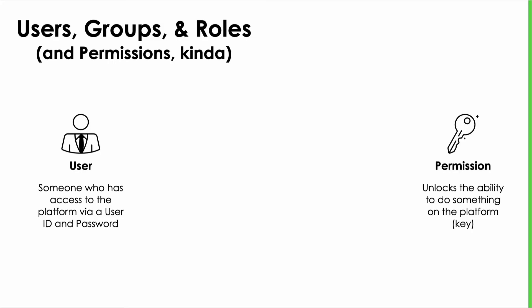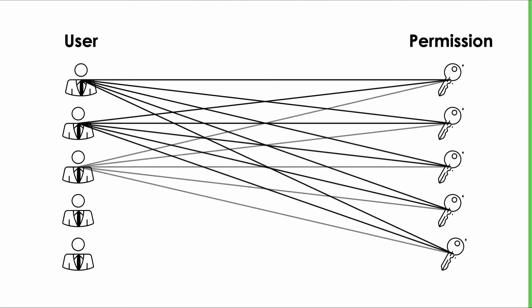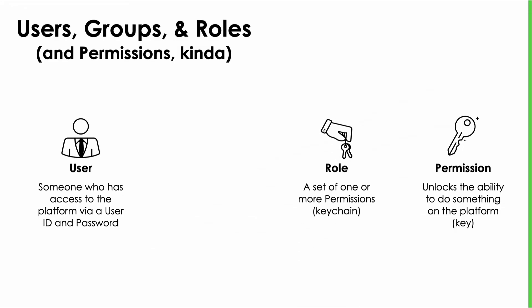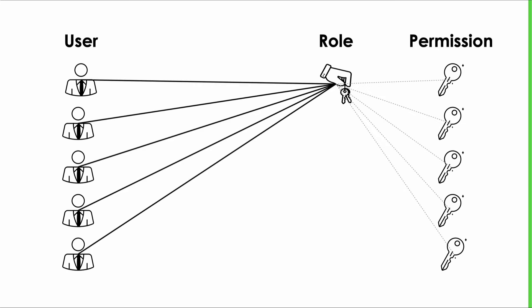Now it would be straightforward to just draw lines between users and permissions — connect them directly. Easy peasy, lemon squeezy. Except if I have five users and they all need the same five permissions or keys, that's 25 lines. You can imagine the management mess we'd have with thousands of users and thousands of permissions, which is not uncommon. So ServiceNow came up with the concept of a role. A role is a set of permissions or keys that have something in common — it's like a keyring with a set of permission keys on it. I could take my five permissions, group them into a role, then draw a line between my five users and my one role — only five lines. That's better, but still a lot.